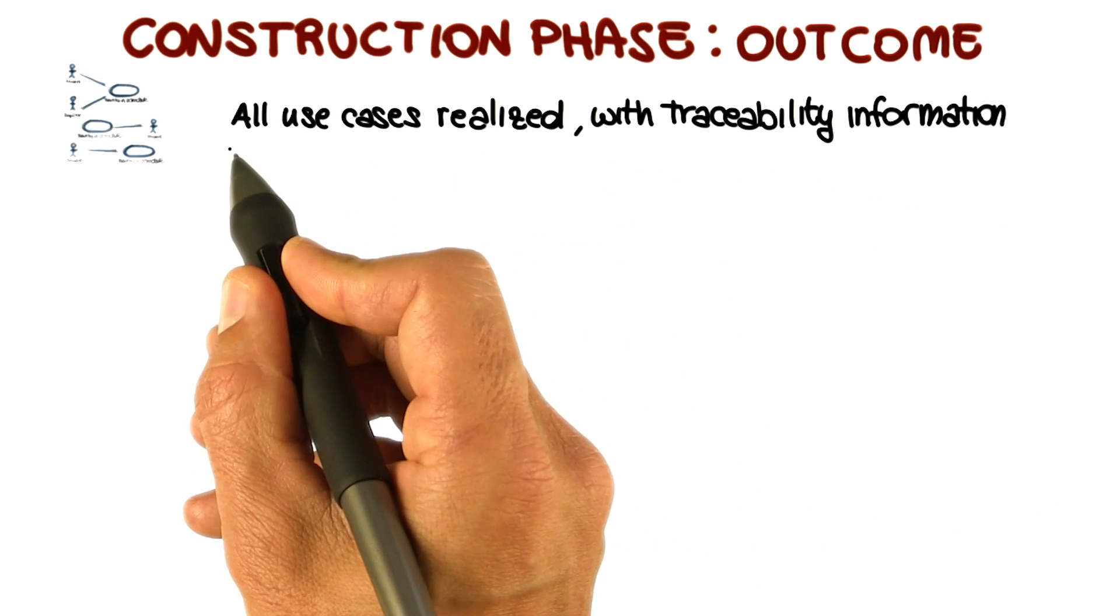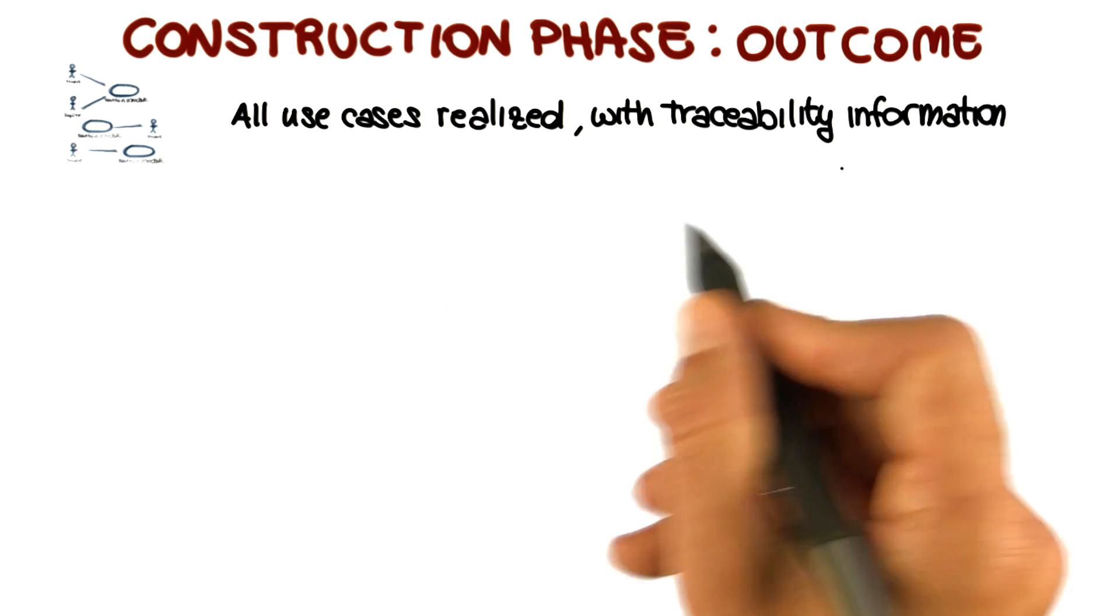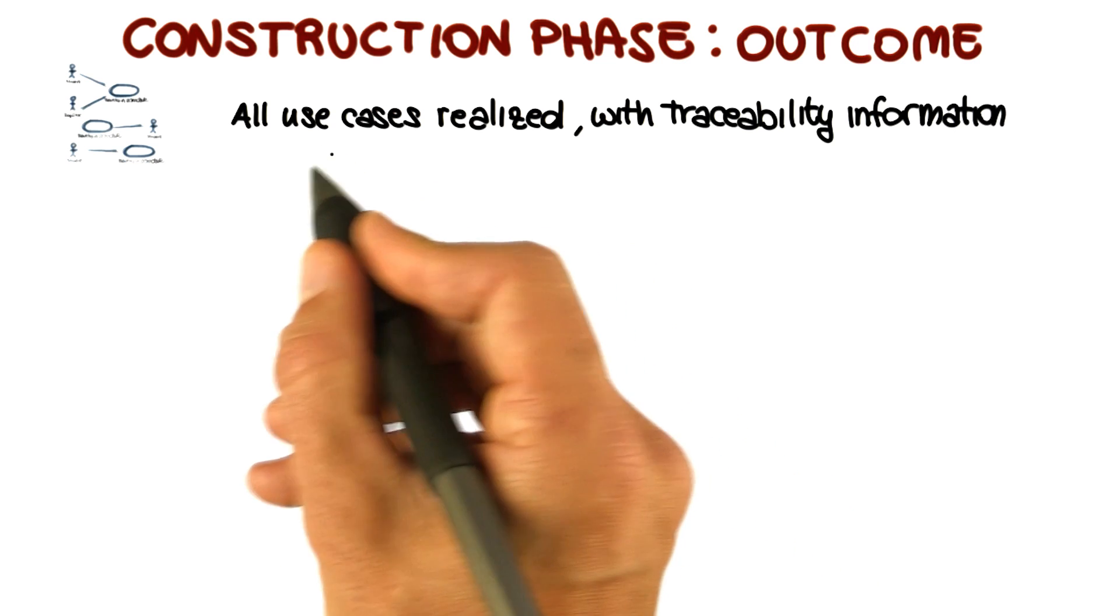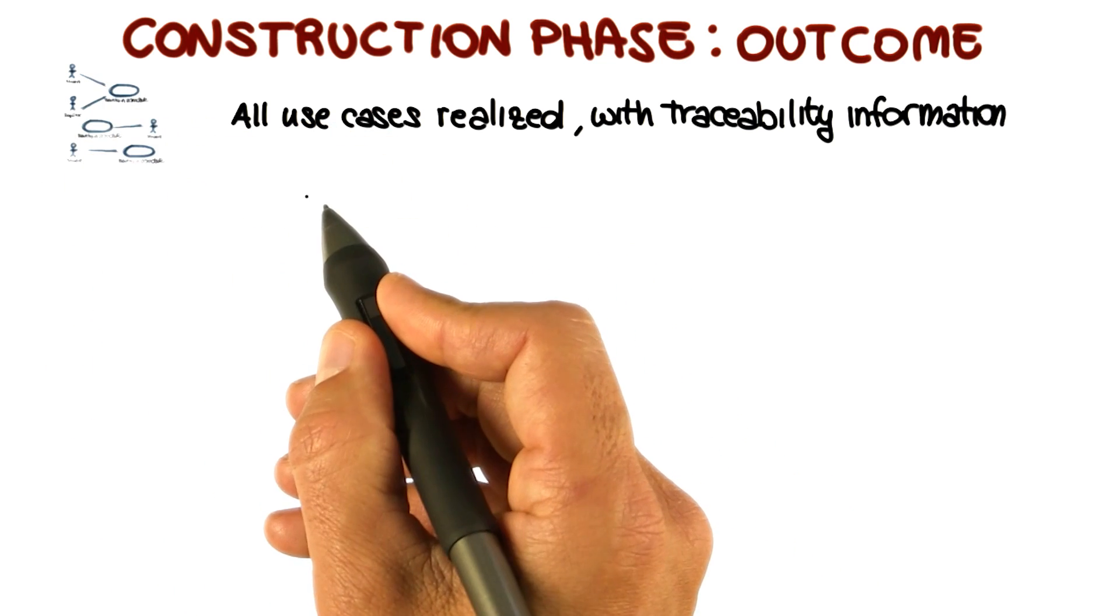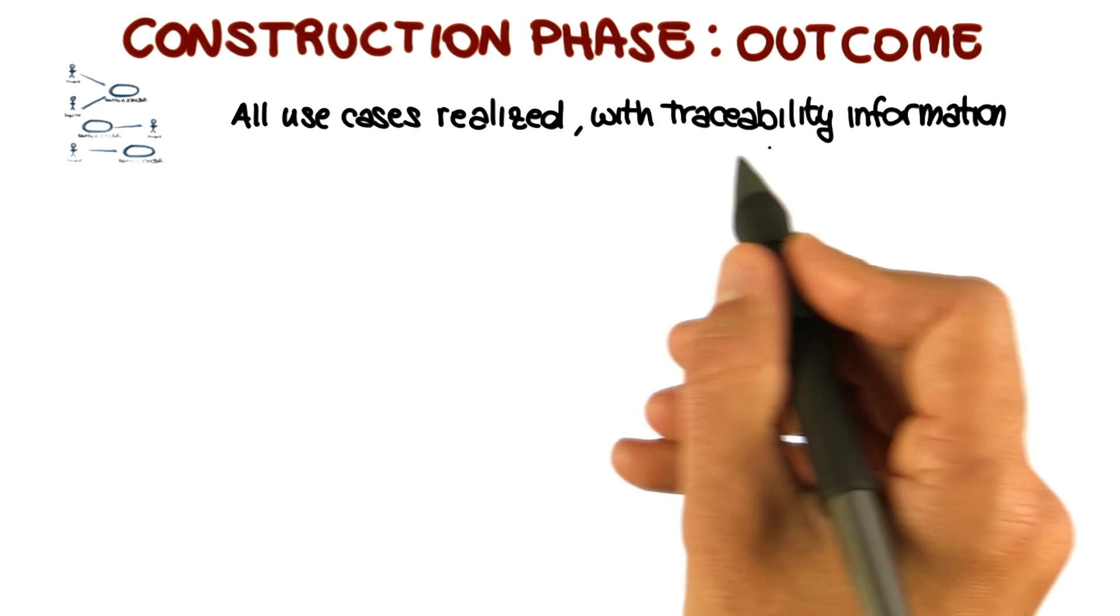First of all, at the end of this phase, all the use cases have been realized with traceability information. What does that mean? It means that not only has all the functionality expressed by the use cases been implemented, but also that we have traceability information from the use cases to the different artifacts.